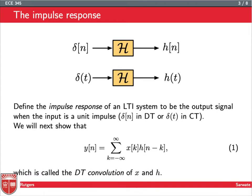What we're going to show is that y of n, the output, is equal to this sum: the sum of x of k times h of n minus k, from k equals minus infinity to infinity. This might be a little confusing at first, and we're going to try to de-confuse you as we go along. This is called the discrete time convolution of x and h.